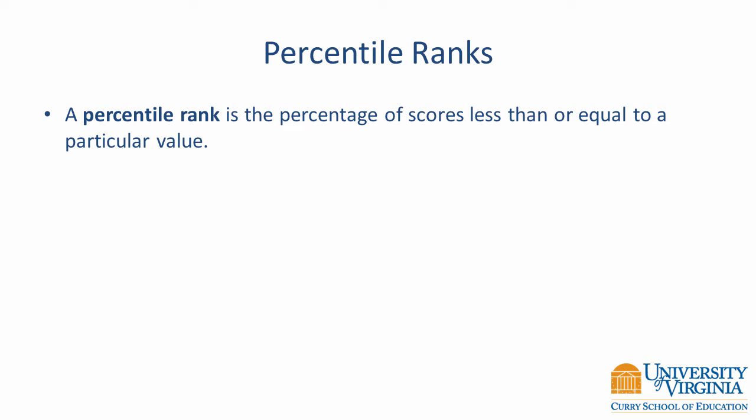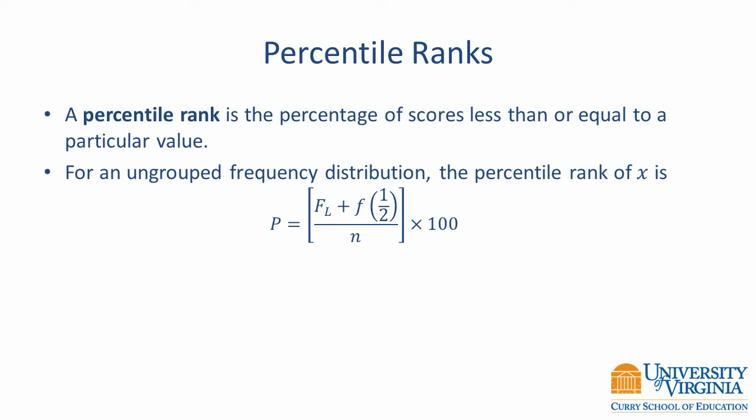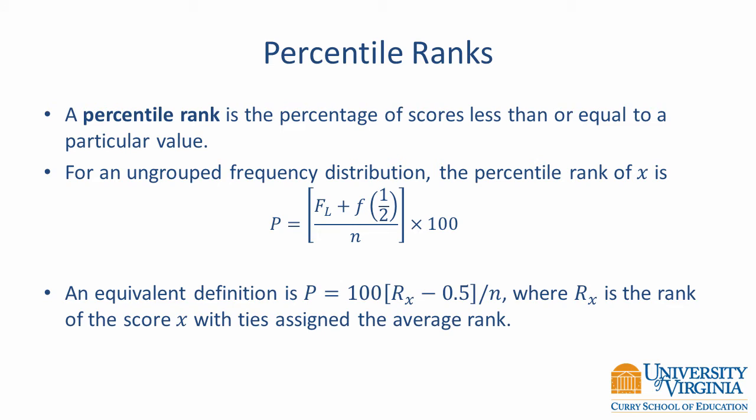A percentile rank is the percentage of scores less than or equal to a particular value. This definition is very similar to the cumulative percentage. The equation for computing a percentile rank from ungrouped data is shown on the slide. We take the frequency of scores below the value of interest and add half of the frequency for the value of interest, then divide this quantity by the sample size and multiply by 100. We only take half of the frequency of scores for the score of interest because the percentile rank is actually the percent of observations scoring below the midpoint of the interval. An equivalent definition is that a percentile rank is a score's rank minus 0.5 divided by the sample size times 100. For this definition, tied scores should use the mean rank. I mention this equivalent definition because introductory statistics text will use one or the other of these two definitions.